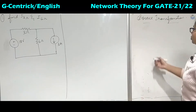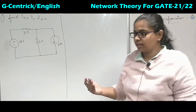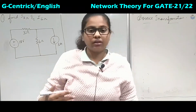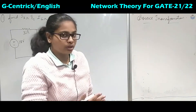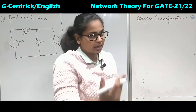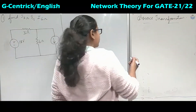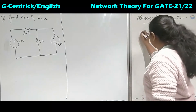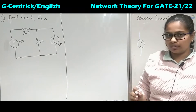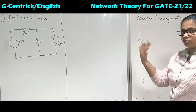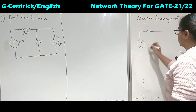So what do we mean by source transformation? In the word itself we have 'source', which means changing one source — that is, a voltage source or current source — to their opposite. If it is a voltage source we can convert it to a current source, and vice versa. To apply source transformation, the source must always be a practical voltage or current source.